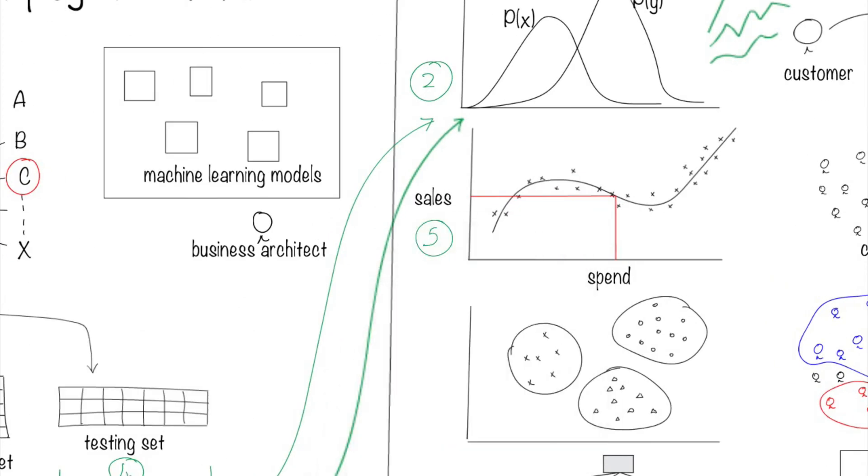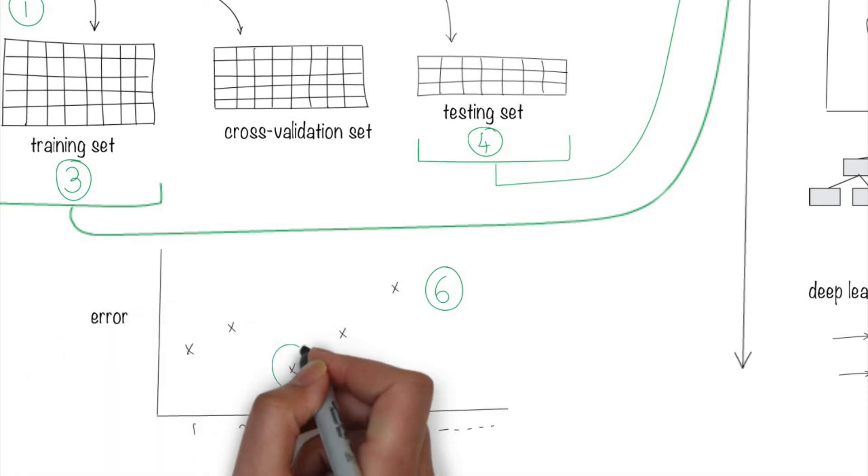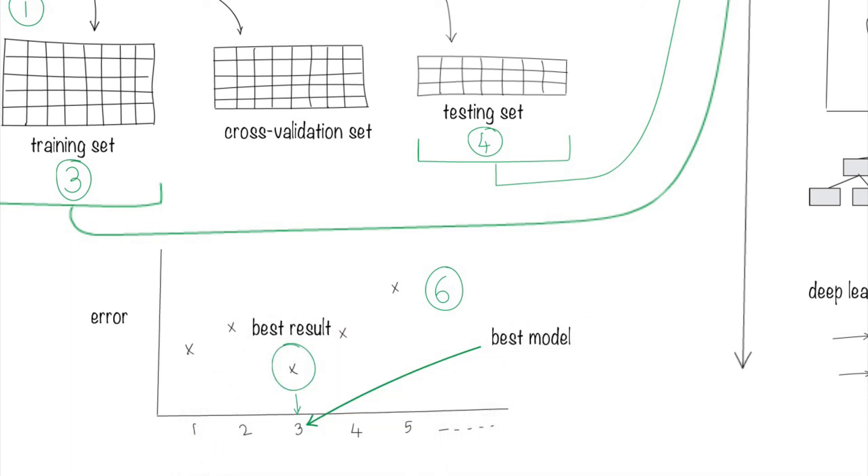Step 5. Now repeat from step 2 with another model. Step 6. After many models have been cycled through, you know which model works best for your particular data, because that would give you the least error. You also know the parameters of that model to use.